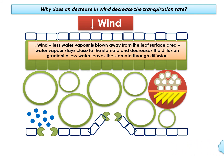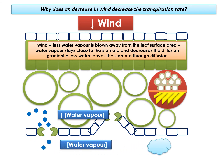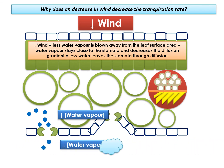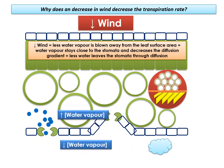Conversely, if the wind speed slows down, less water vapor will be removed from the surface of the leaf and it won't be removed as frequently. It could be allowed to build up, therefore reducing the steepness of the diffusion gradient and thereby reducing the rate of transpiration.